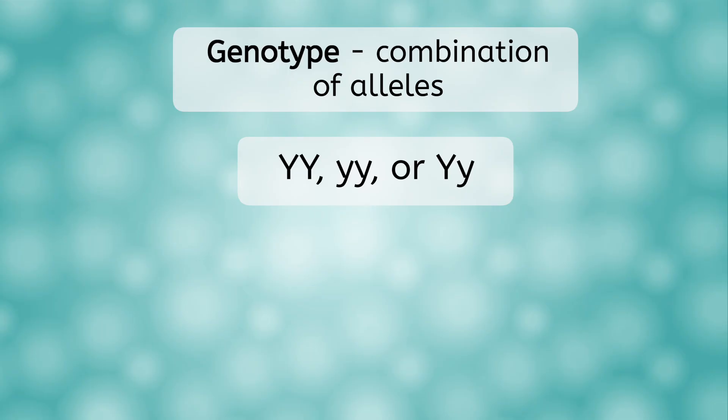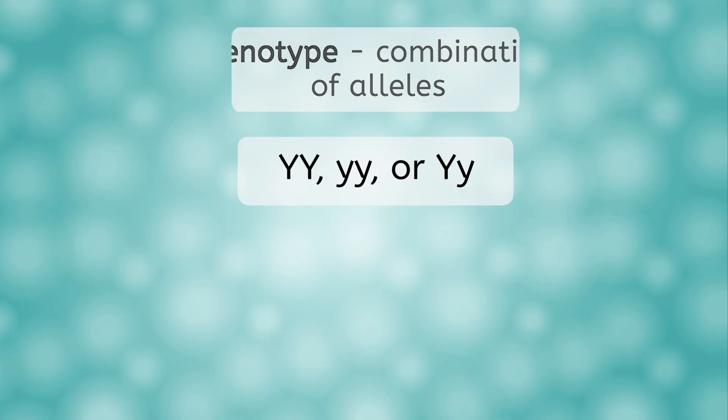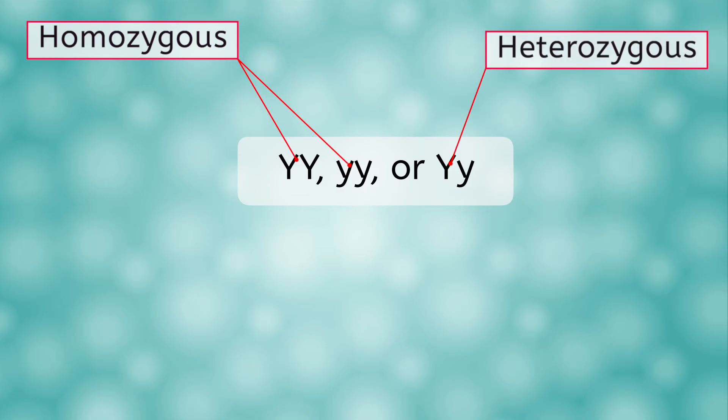The genotype refers to its combination of alleles, which is represented with big and small letters, such as big Y, big Y, little y, little y, or big Y, little y. Homozygous genotypes have two of the same alleles, while heterozygous genotypes have different alleles.